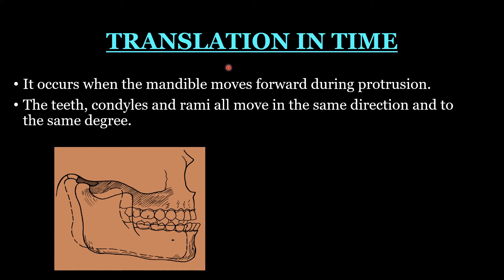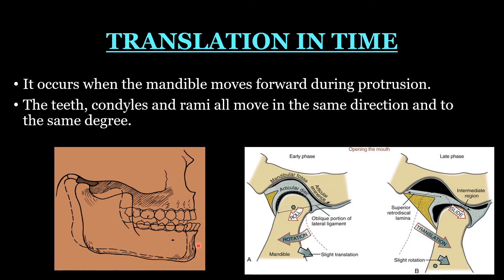Translation is a movement where every point of the moving object simultaneously has the same velocity and the same direction. Time is the fourth dimension in mandibular movement. Translation mainly occurs when the mandible moves forward during protrusion — the teeth, condyle, and rami all move in the same direction and to the same degree. Rotation occurs in the inferior cavity of the joint, below the articular disc, while translation occurs in the superior cavity, above the articular disc, mainly in the later half of protrusion.